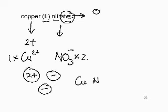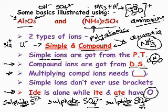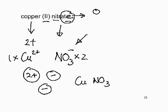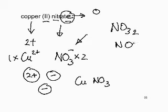We have one copper and two nitrate ions. This is the first time we've come across brackets. The rule is: multiplying compound ions requires brackets; simple ions never use brackets. If we wrote NO₃₂ it would look like we have one N and 32 oxygens, which is clearly wrong. We need to indicate two nitrates.